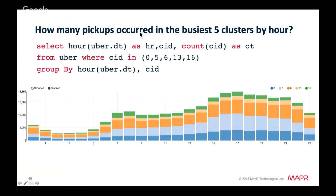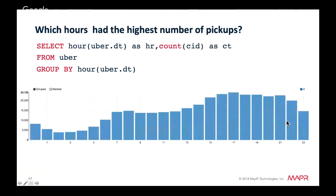Another query: how many pickups occurred in the busiest five clusters by hour? We select by hour from the datetime and cluster ID, count the cluster ID, and filter by those clusters. Clusters 6 and 5 are the busiest, especially during hours 15 through 21 — 3 PM to 9 PM. By hour overall, 5 PM has the highest number of pickups.